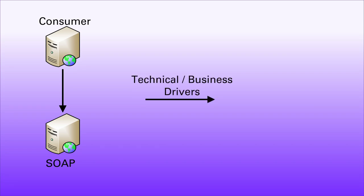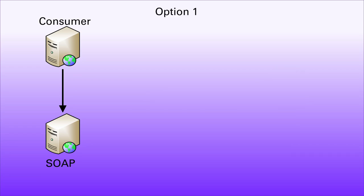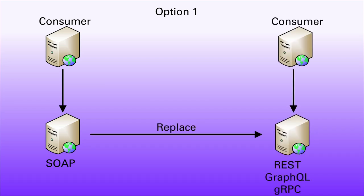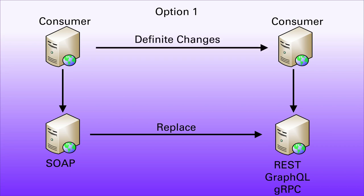You might have, like many of us, existing legacy SOAP APIs, and you've got some technical or business drivers requiring you to move on from that SOAP service. Option one could be to completely replace the SOAP API with some other technology, be it a RESTful API, GraphQL, or gRPC. That's totally viable, but it's a big deal and there will definitely be changes required for your consumers.